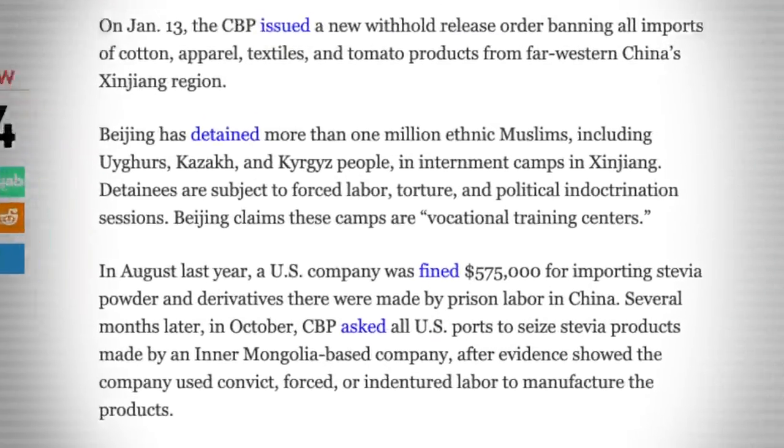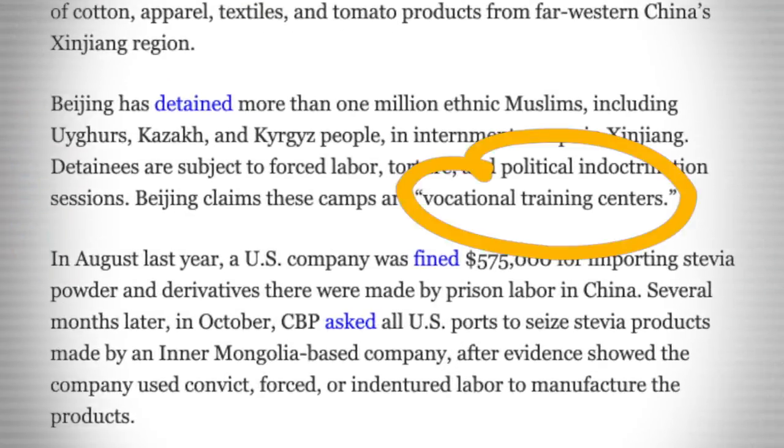Why? Well, it could have something to do with the fact that the State Department declared that the Chinese Communist Party is conducting a genocide against Uyghur Muslims over in Xinjiang. You might have already heard that the Chinese Communist Party has detained more than a million ethnic Muslims and placed them in internment camps over in Xinjiang, where they're subject to forced labor, torture, and political indoctrination sessions. In their defense, China claims that these camps are not concentration camps, but instead vocational training centers. You have to hand it to the communists, they really have a way with using language.